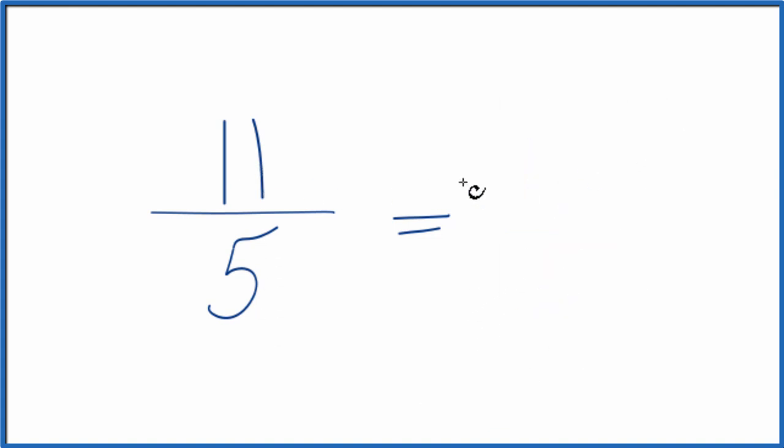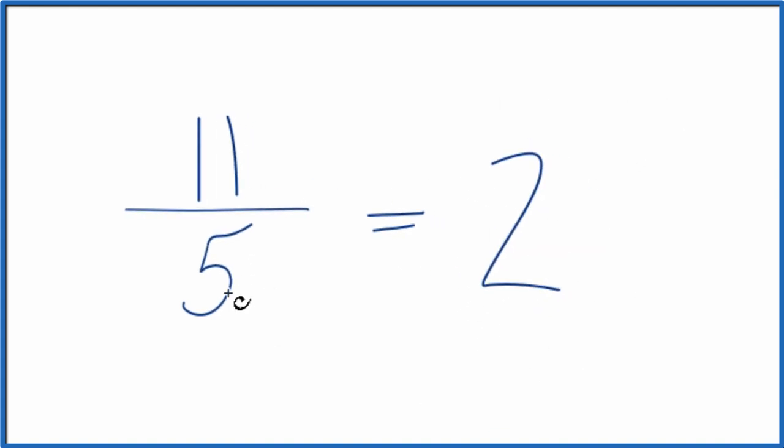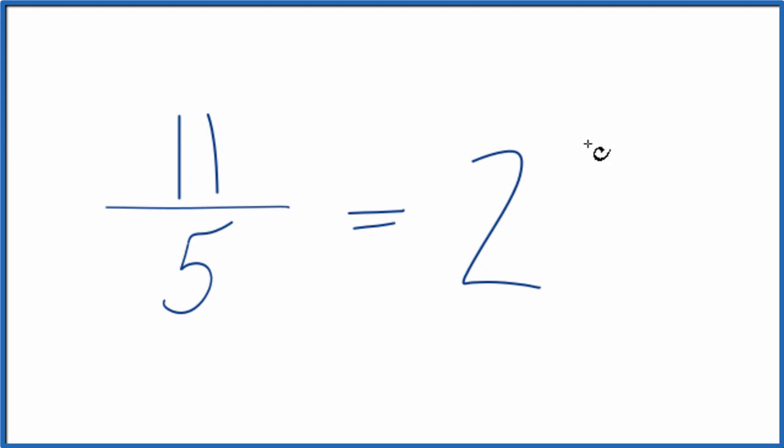5 goes into 11 twice because 2 times 5 is 10. We have 1 left over, and then we bring the 5 across. So 11 fifths is the same as 2 and 1 fifth.